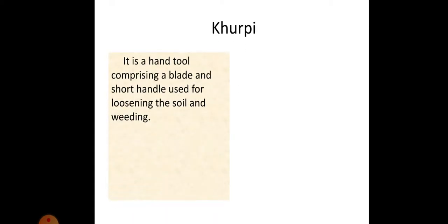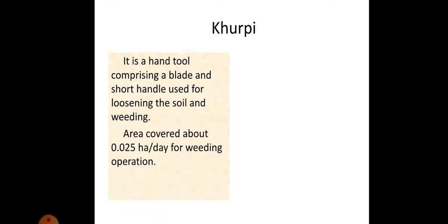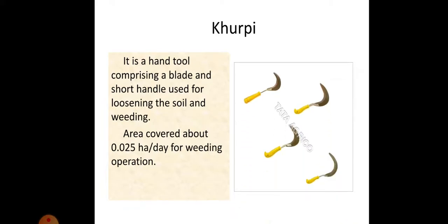Khurpi: it is a hand tool comprising a blade and short handle used for loosening the soil and weeding. Area covered is about 0.025 hectare per day for weeding operations. It is also called a sickle.